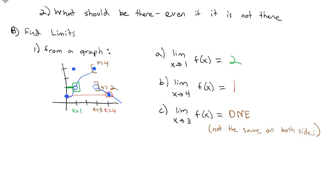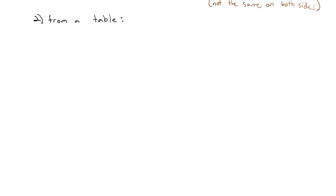So that's how we can pull a limit off of a graph — we look at what y-coordinate we're getting close to for a given x-coordinate. Another way we can find the limit is from a table. Let's say we have the function f(x) = (x²-x-6)/(x-3), and we're looking for the limit as x gets close to 3.